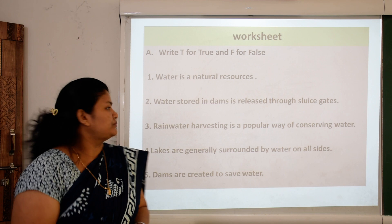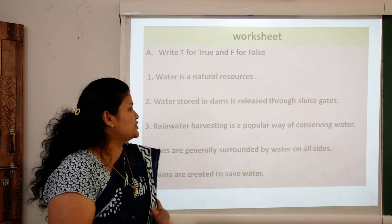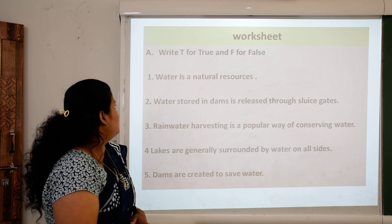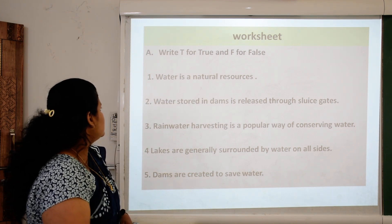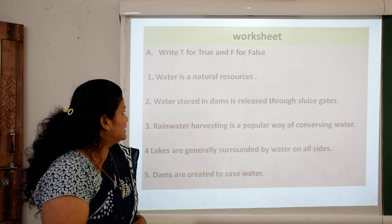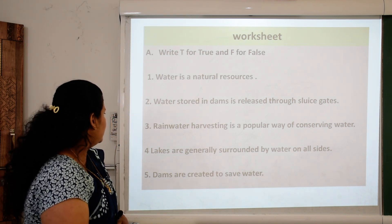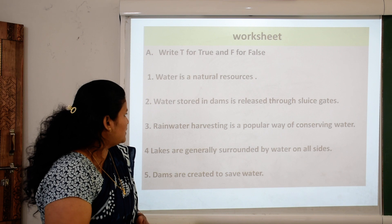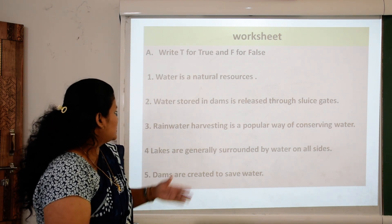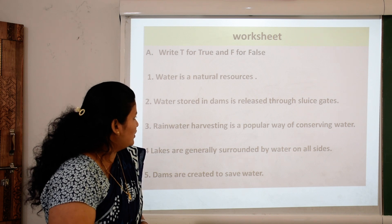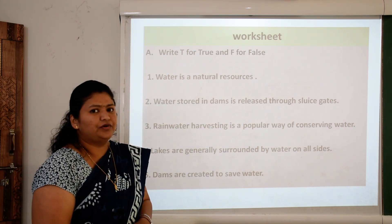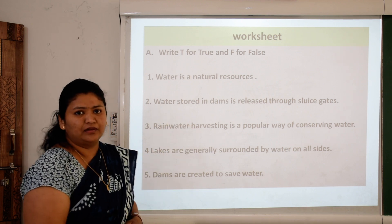Now, worksheet. Please complete it. True or False: First, water is a natural resource. Second, water stored in dams is released through sluice gates. Third, rainwater harvesting is a popular way of conserving water. Fourth, lakes are generally surrounded by water on all sides. Fifth, dams are created to save water.